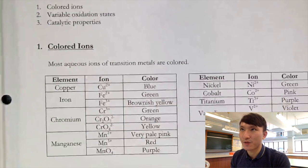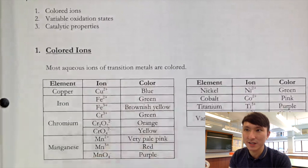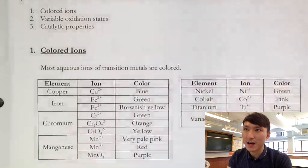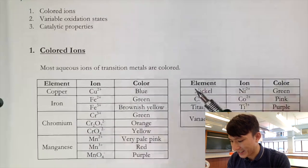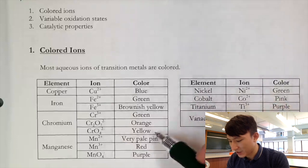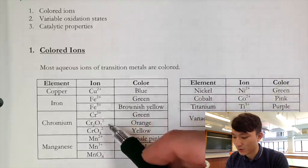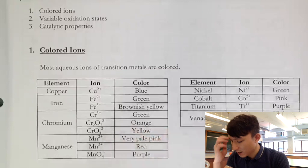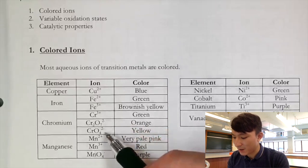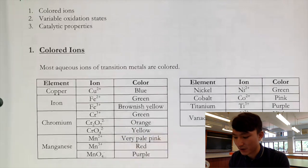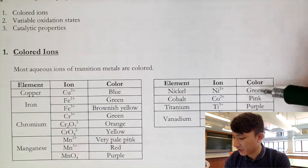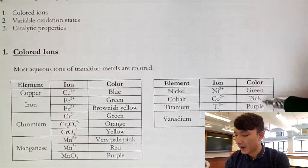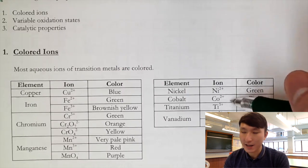First: colored ions. Transition metals form colored ions in aqueous solution. Some examples: chromium(III) is commonly seen, and dichromate ion is yellow. Manganese(III) is red. Nickel is green. Cobalt is pink — this is why dry cobalt(II) chloride paper turns pink when it comes in contact with water, because the Co²⁺ aqueous ion is pink.